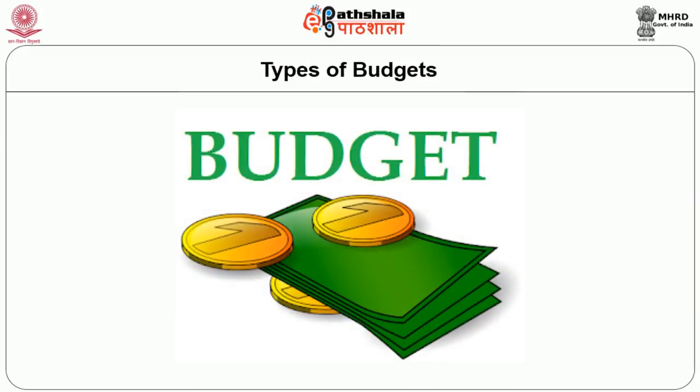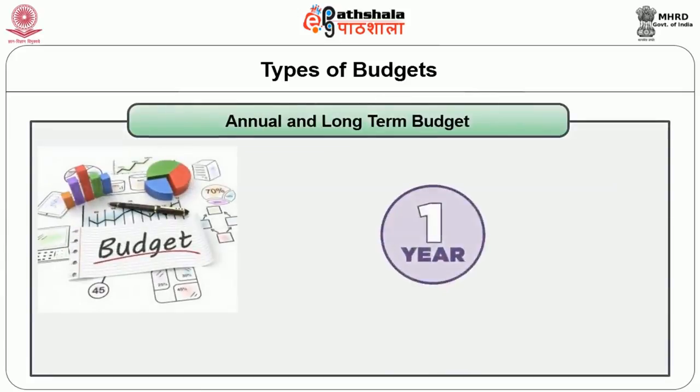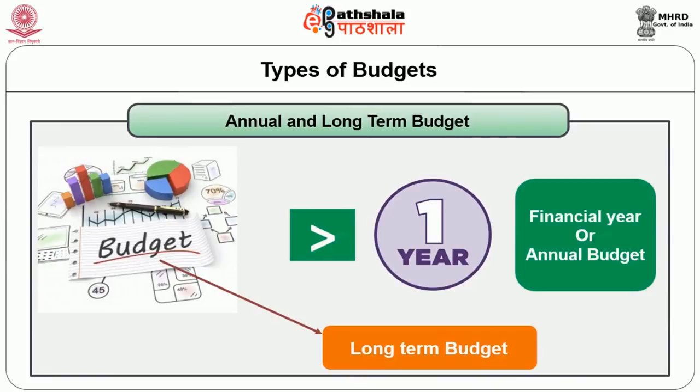Types of Budget: Budget has a long historical past, and modern government budgeting is the result of a long evolutionary process. As such, different types have been used depending upon the purpose, need, time period, financial position of the government, focus on achievements, etc. First, Annual and Long Term Budget — when the budget is prepared for one year, which is generally known as a financial year, it is called annual budget. On the other hand, if it is for more than one year, then it is called long term budget. However, the common trend is to make budget on an annual basis.